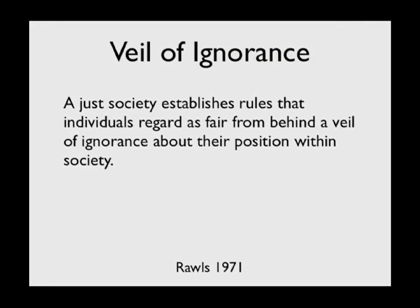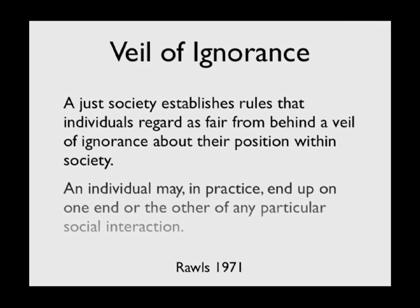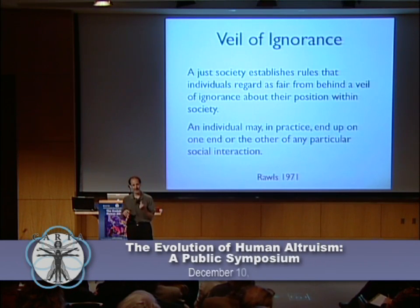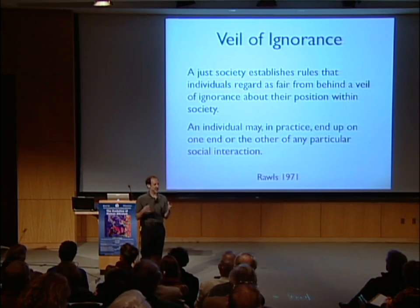Rawls said: a just society establishes rules that individuals regard as fair from behind a veil of ignorance about their position within society. An individual may in practice end up on one end or the other of any particular social interaction — you're randomly assigned to a position, so you better think the overall structure is okay. This notion of randomization is extremely powerful in terms of creating fairness. I've been talking about human moral philosophy, but I started out by telling you I was going to tell you about the history of life — so how does this idea of randomization apply throughout the history of life?